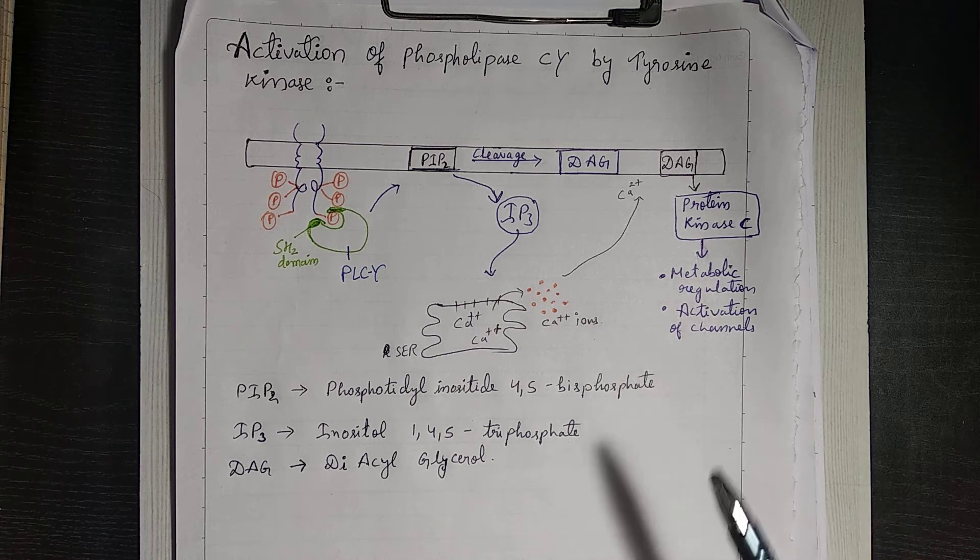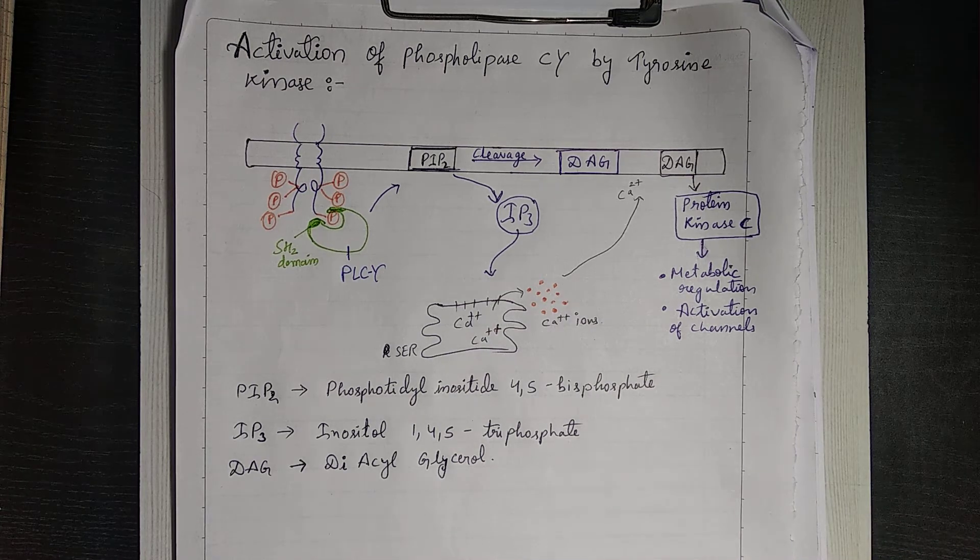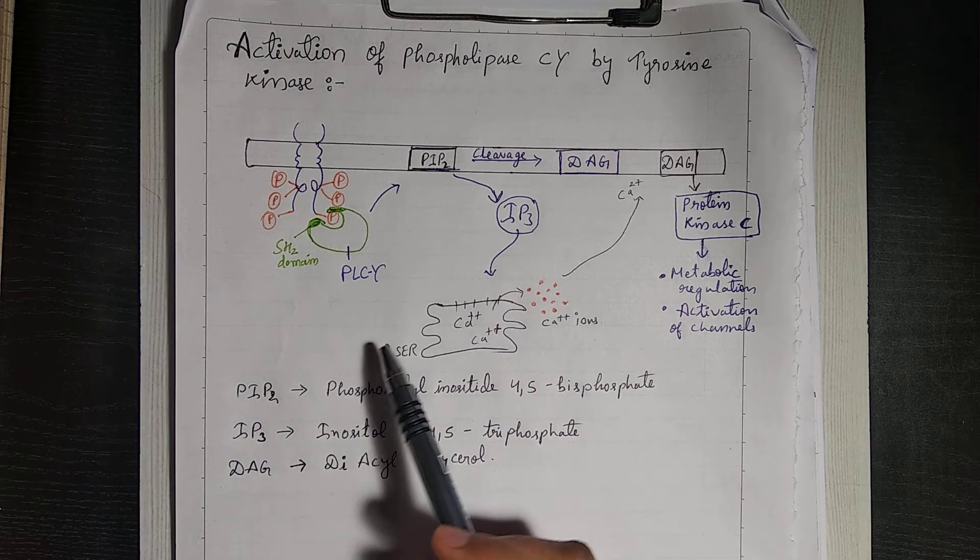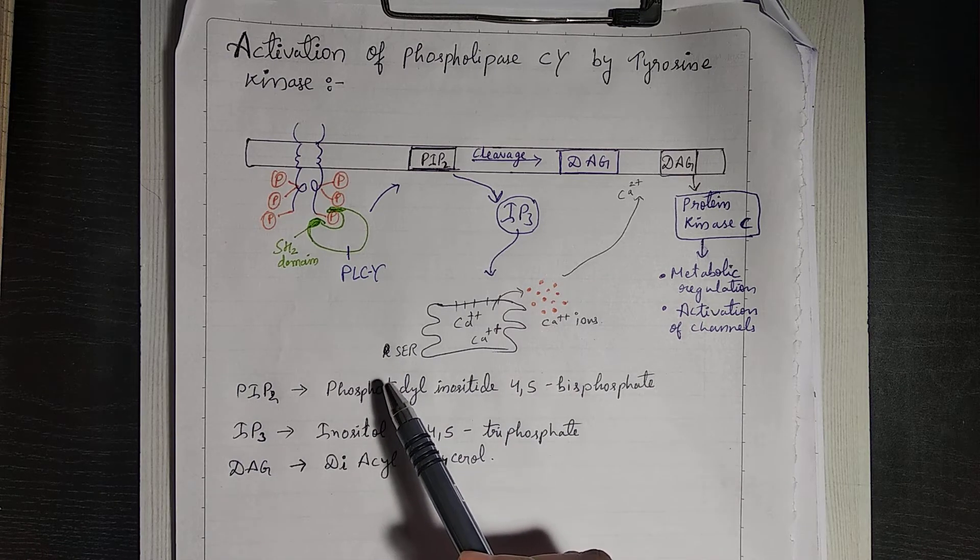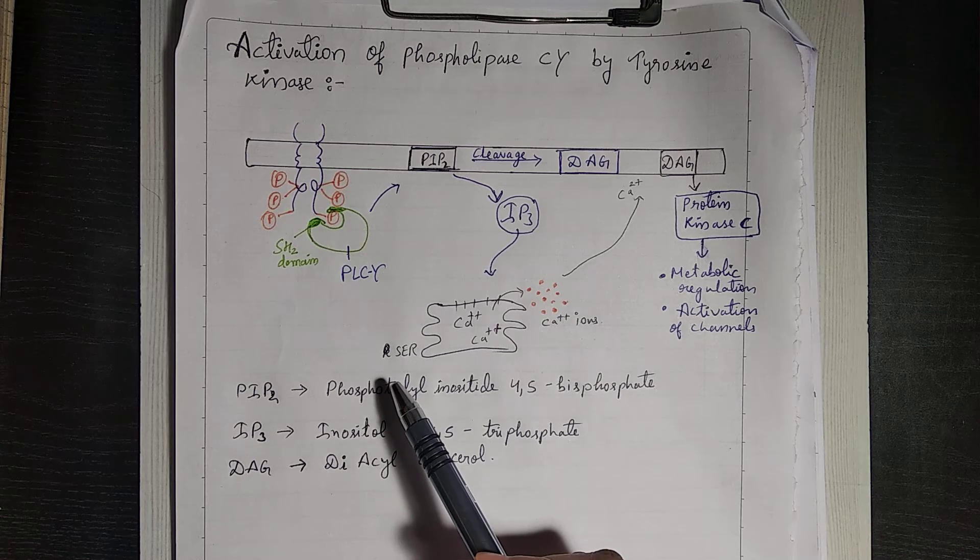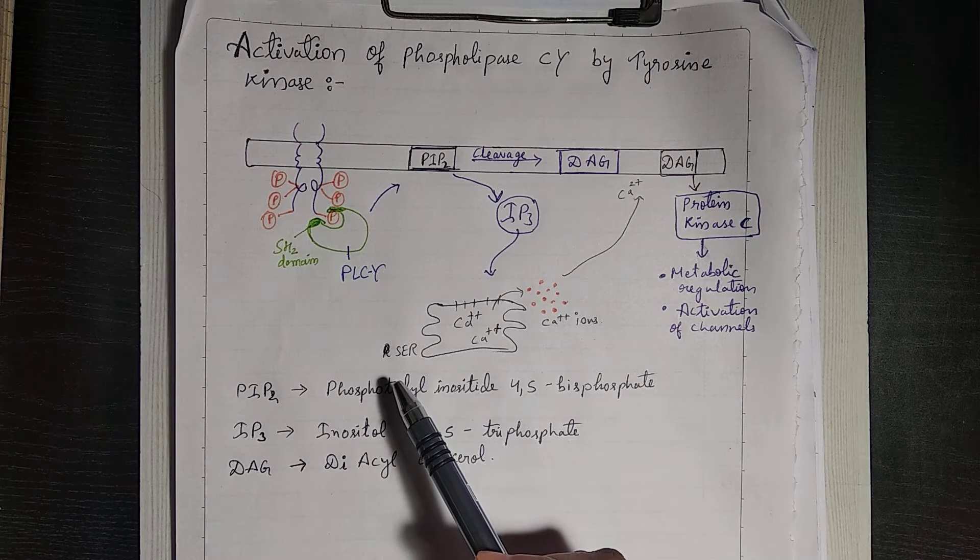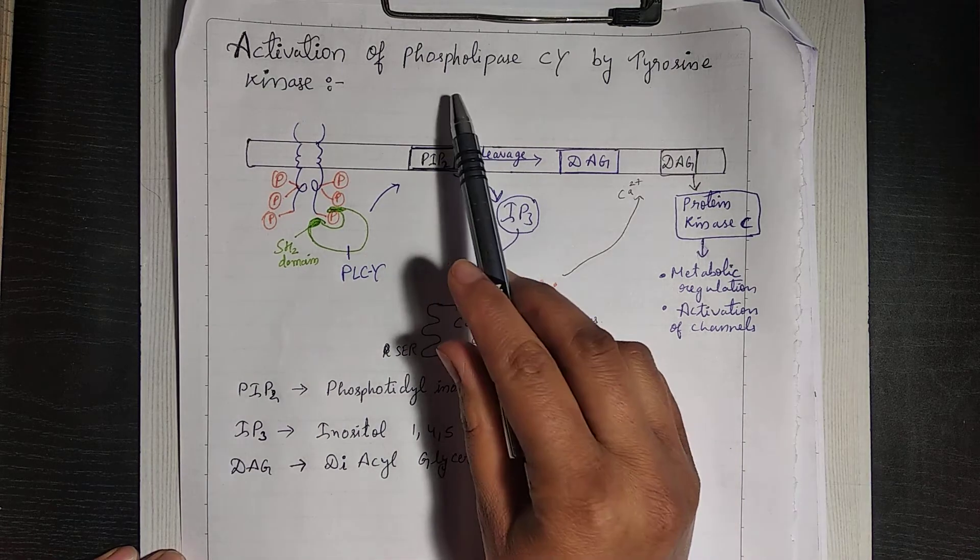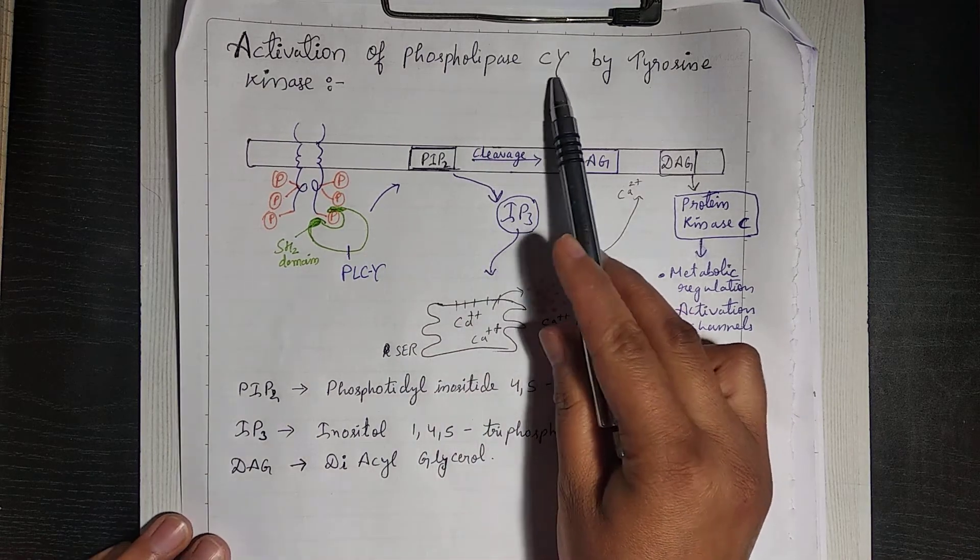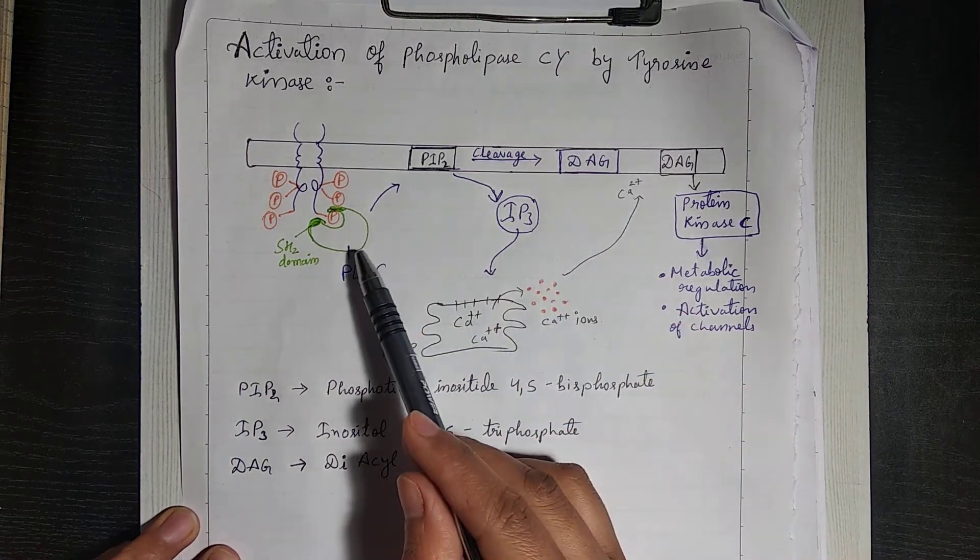Hello dear friends and learners, welcome to your channel Science in the Veins. In the previous video we discussed the mTOR pathway in detail. Now in this video we are going to discuss the last pathway which we will cover under receptor tyrosine kinase. Today's lecture will be on Phospholipase C gamma pathway.